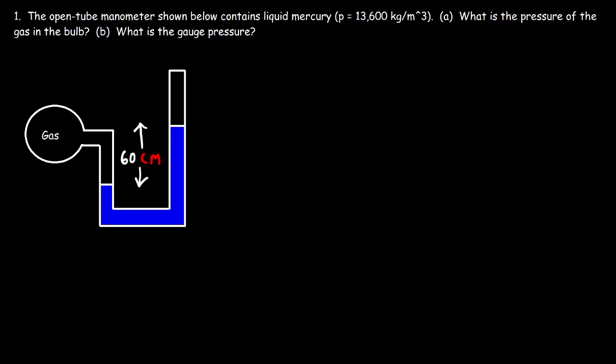In this video we're going to focus on solving physics problems associated with open tube manometers. The open tube manometer shown below contains liquid mercury, and we're given the density of mercury. What is the pressure of the gas in the bulb?